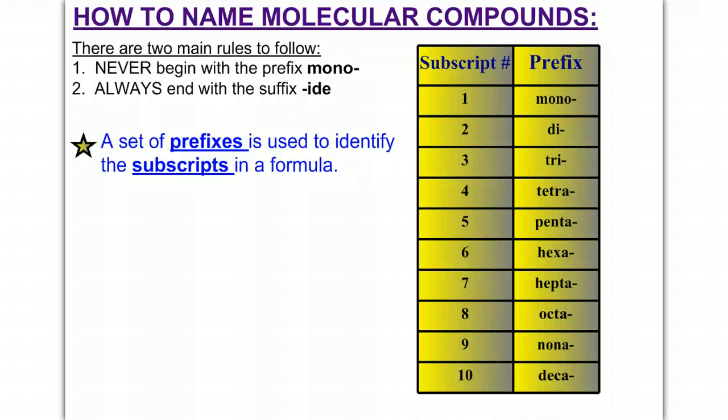All right, so how to name molecular compounds. There's two main rules to follow. The first one is you never begin with the prefix mono, meaning if I start with only one, for example, if I had NO...